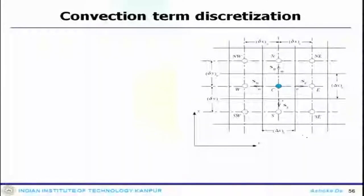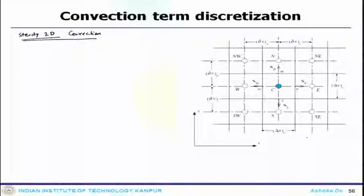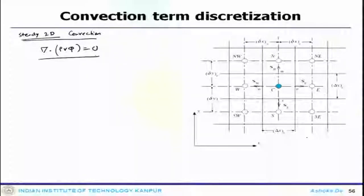Now we will move ahead and look at the two-dimensional steady 2D convection system. Our discussion so far covered all the schemes for the convection-diffusion equation. Here we will start with the 2D steady convection only, which is represented as ∇·(ρVφ) = 0. That is equation one, which governs the two-dimensional steady convection system without any external source term.